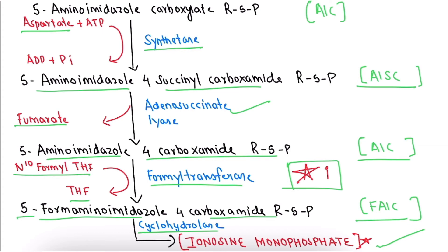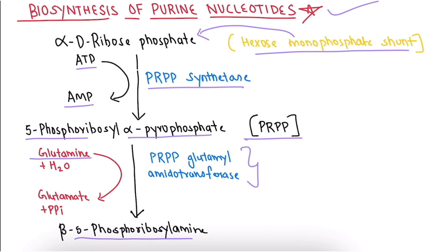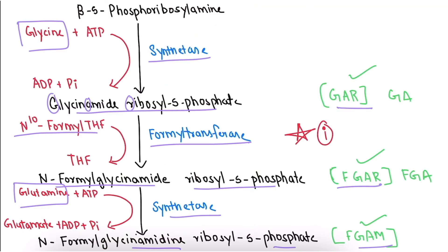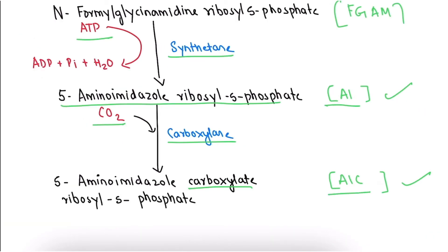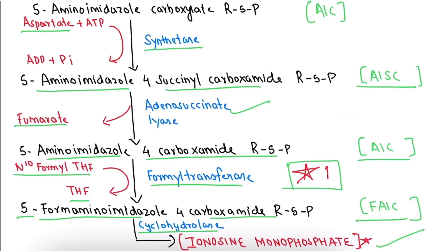Let's revise once more. In the first step, Alpha-D-ribose-5-phosphate (from hexose monophosphate shunt) forms PRPP, which is converted to beta-5-phosphoribosylamine. In the second slide: GA, FGA, and FGAM. In the third slide: AI and AIC. In the fourth slide: AISC → AIC → FAIC → and the final product, Inosine Monophosphate (IMP), formed in the presence of enzyme cyclohydrolase.